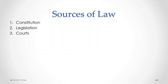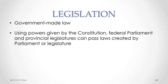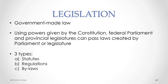The three sources of law that we have in Canada are the constitution, legislation, and the courts. The constitution we will examine later on in this module. In this part, we'll look at legislation — also called government-made law — and also the courts. The three types of legislation are statutes, regulations, and bylaws.